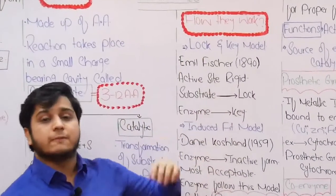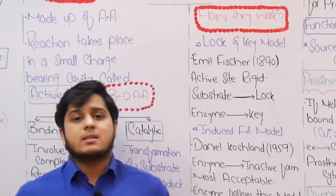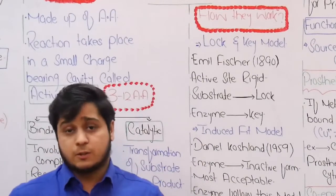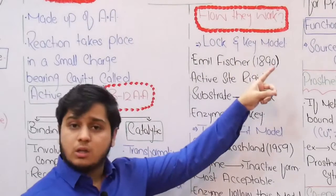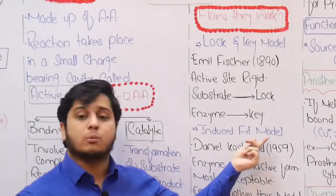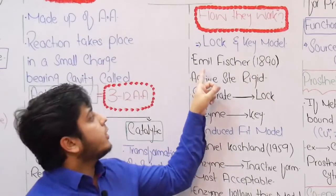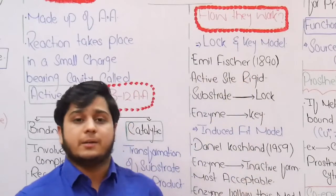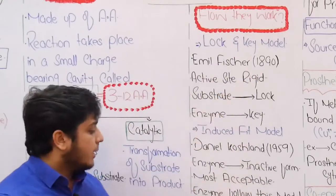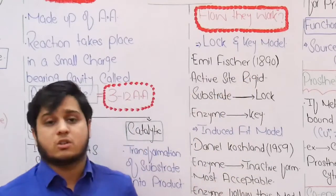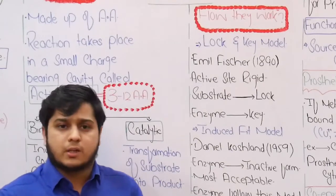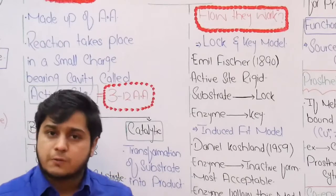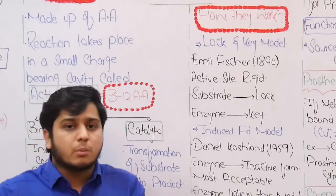The next topic is how enzymes work. To discuss enzyme's proper functioning, there are two models. The first one is the lock and key model and the second one is the induced fit model. The lock and key model was first proposed by Emil Fischer in 1890. In this model, the enzyme's active site is a rigid structure — it means no flexibility exists.